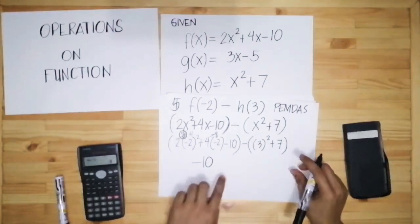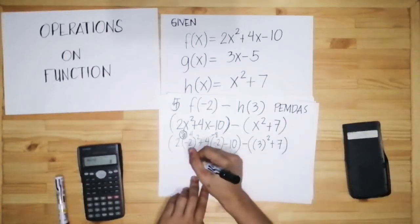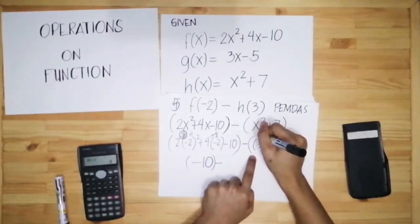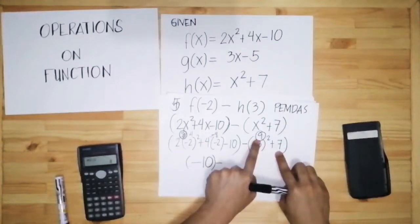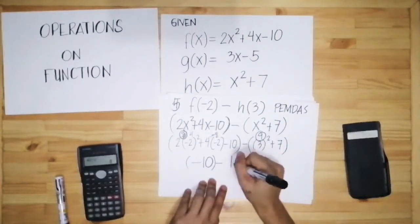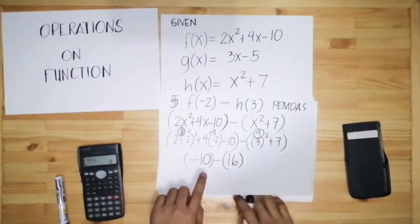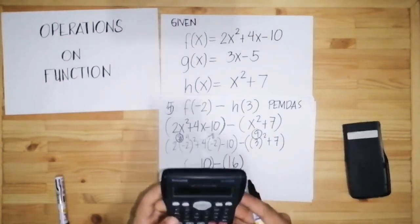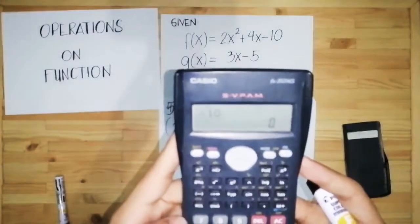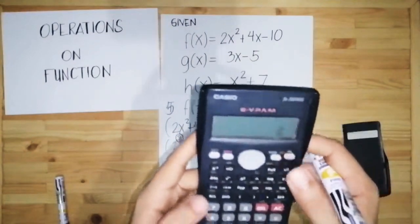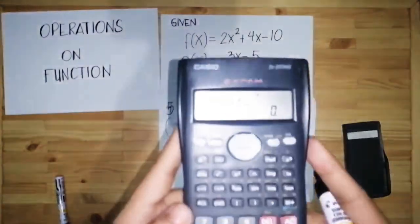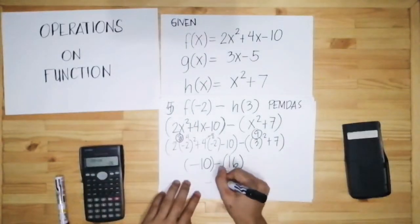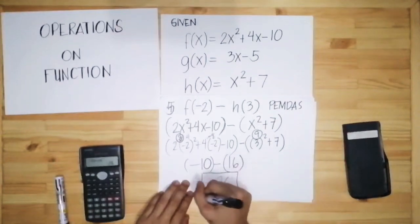For the second parenthesis, minus: 3 raised to 2 is 9, plus 7 equals 16. So minus 16. Now evaluate: negative 10 minus 16 equals negative 26. So the answer for number 5 is negative 26.